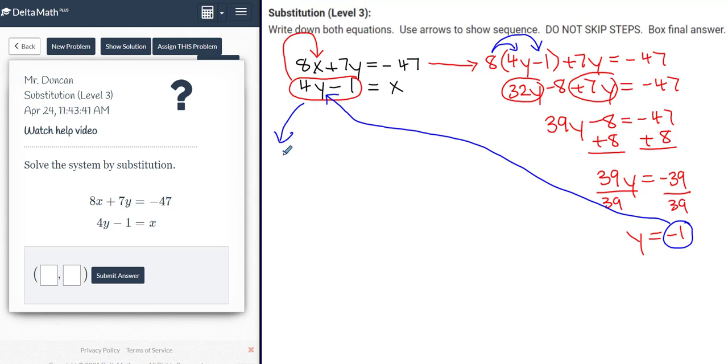Using blue, I'm just going to rewrite it over here. So I have 4, parentheses, in goes negative 1, minus 1, is equal to x.